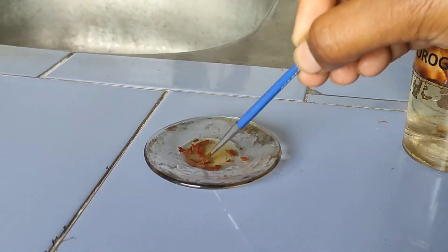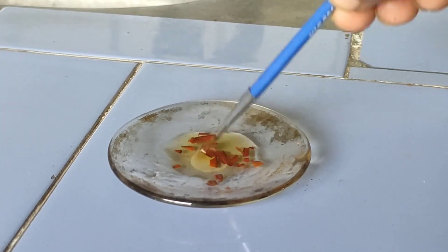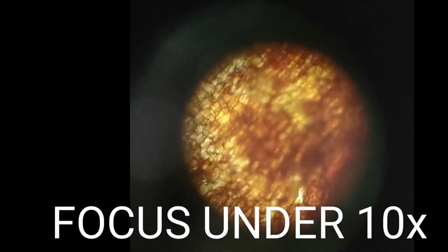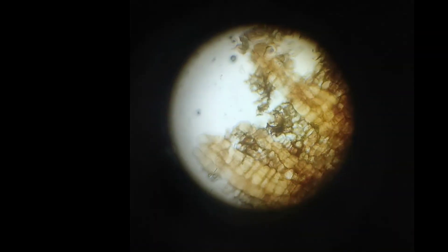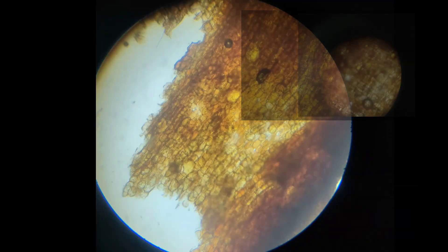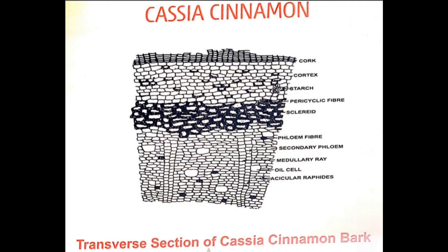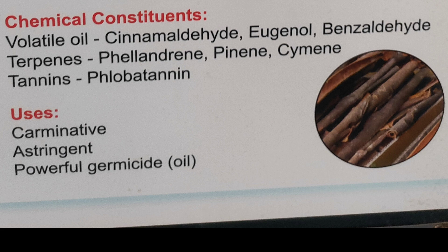Among the samples, select the good thin section and place it on a slide and add a drop of glycerin. Now observe under 10x microscope. These are some of the images of the transverse section of cinnamon. Thank you for watching.